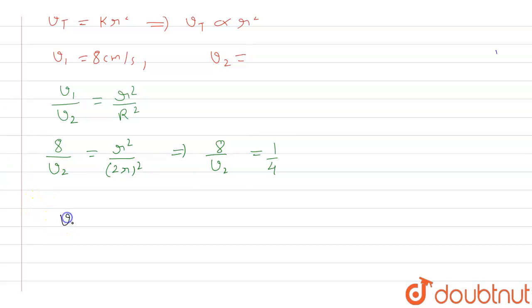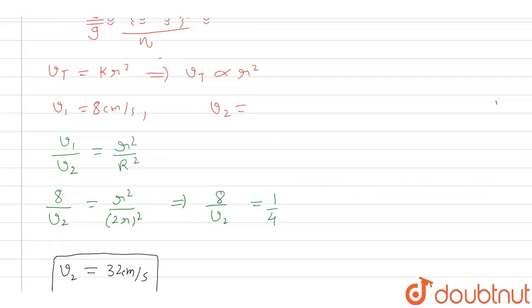So when we further solve this, we get 8 by v2 is equal to 1 by 4, and finally when we get the value, we get v2 is equal to 8 times 4, that is 32 centimeter per second. So this is the answer of this question.